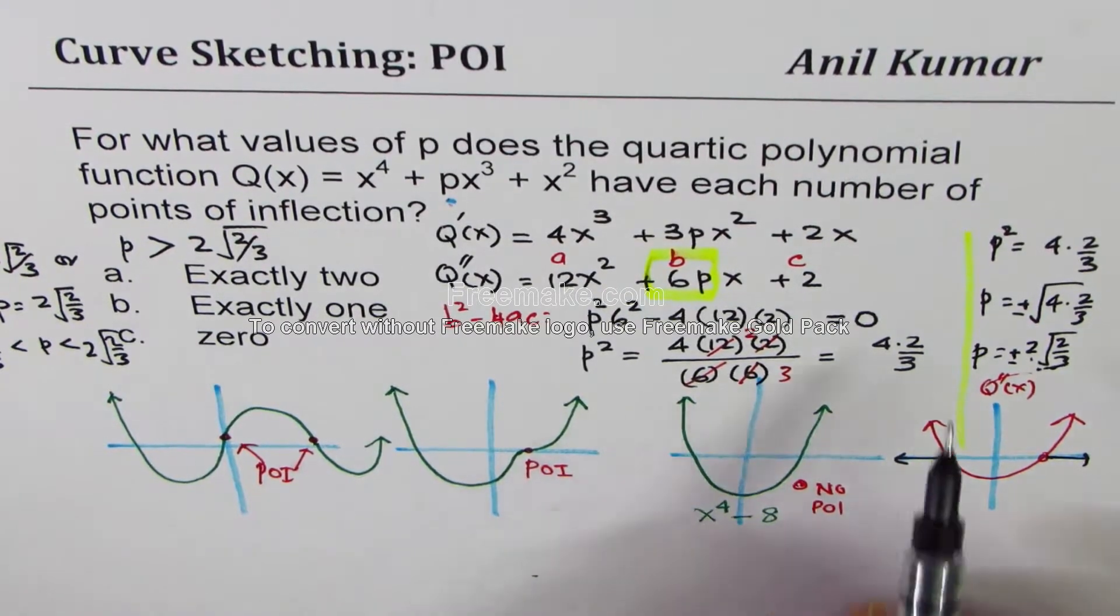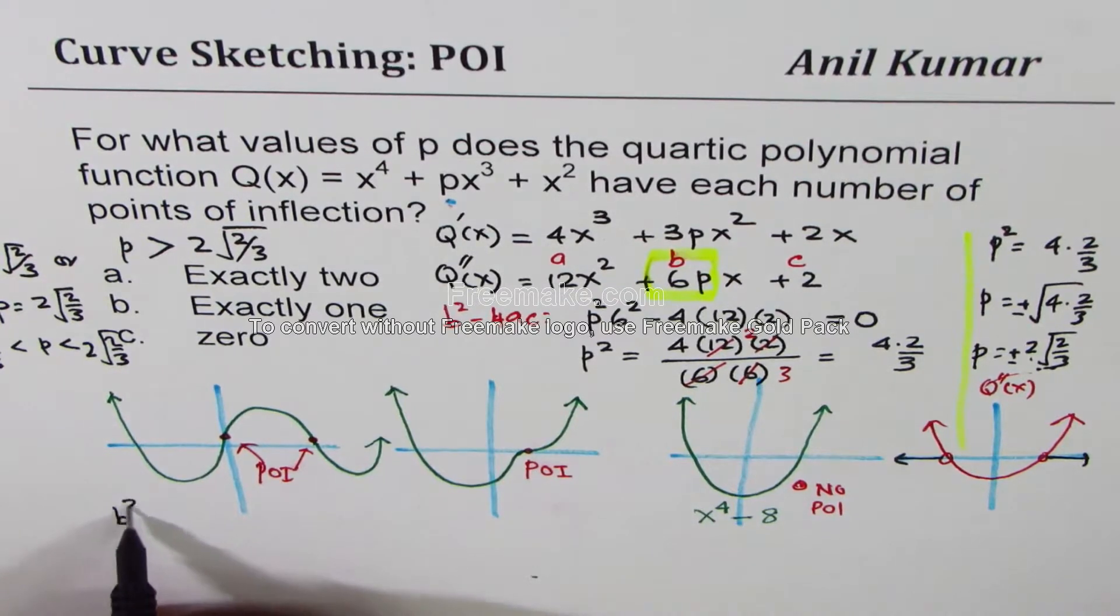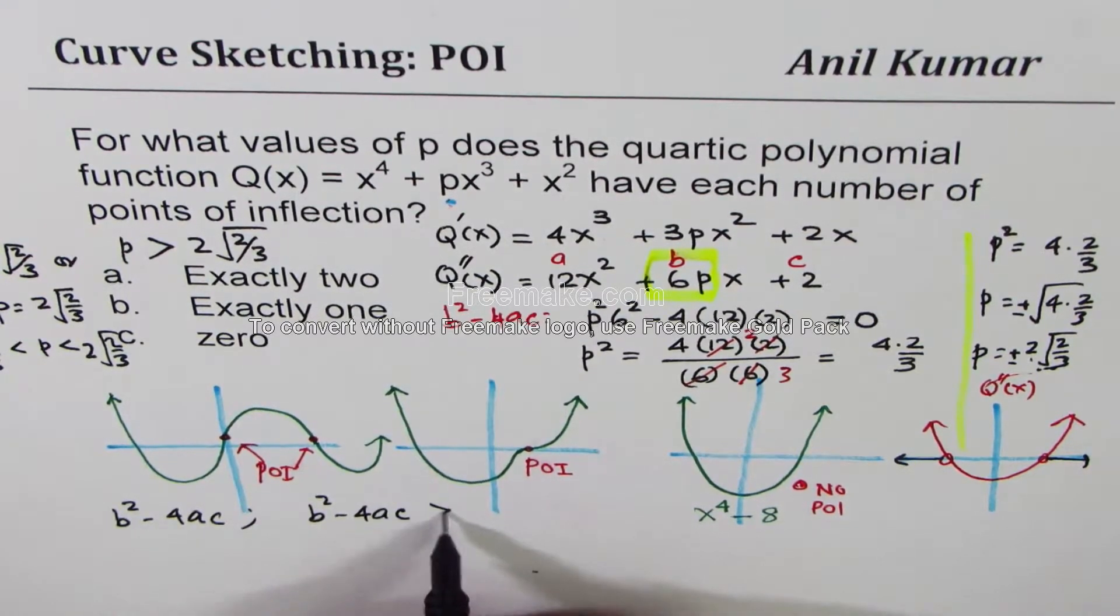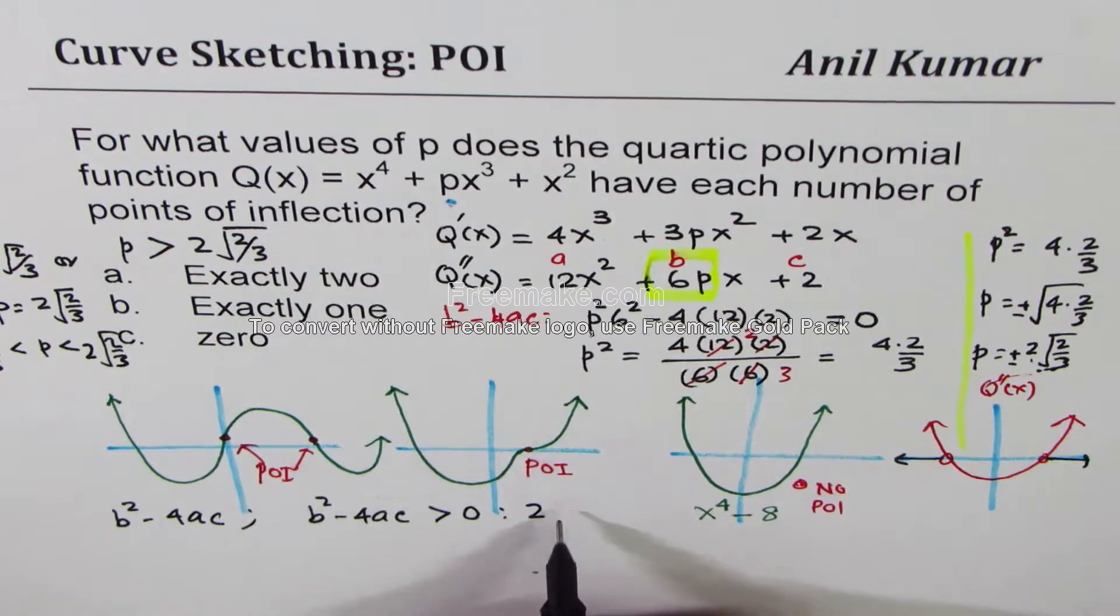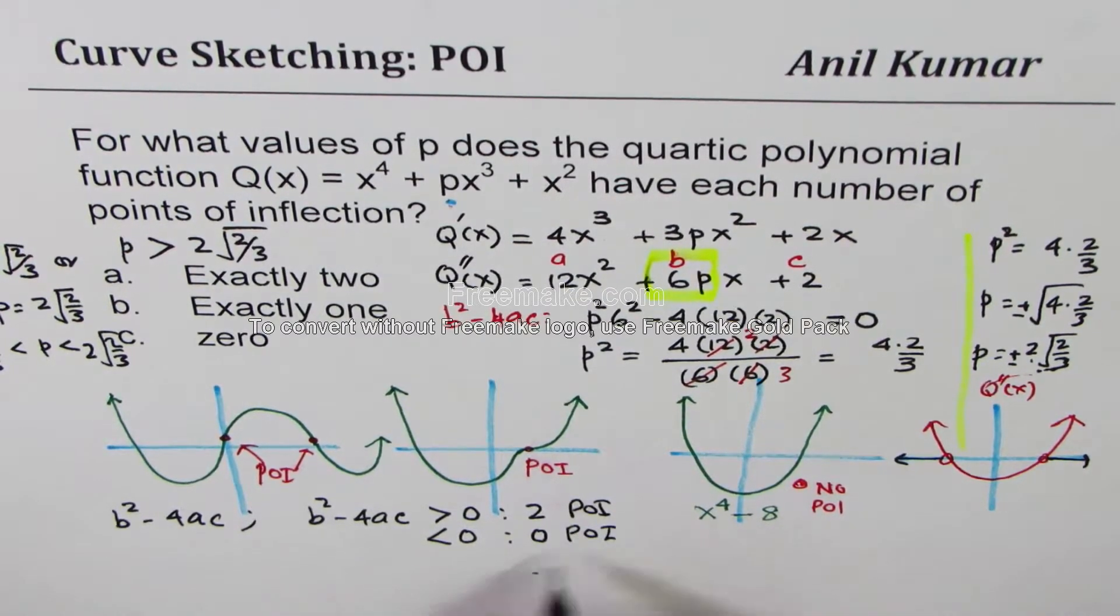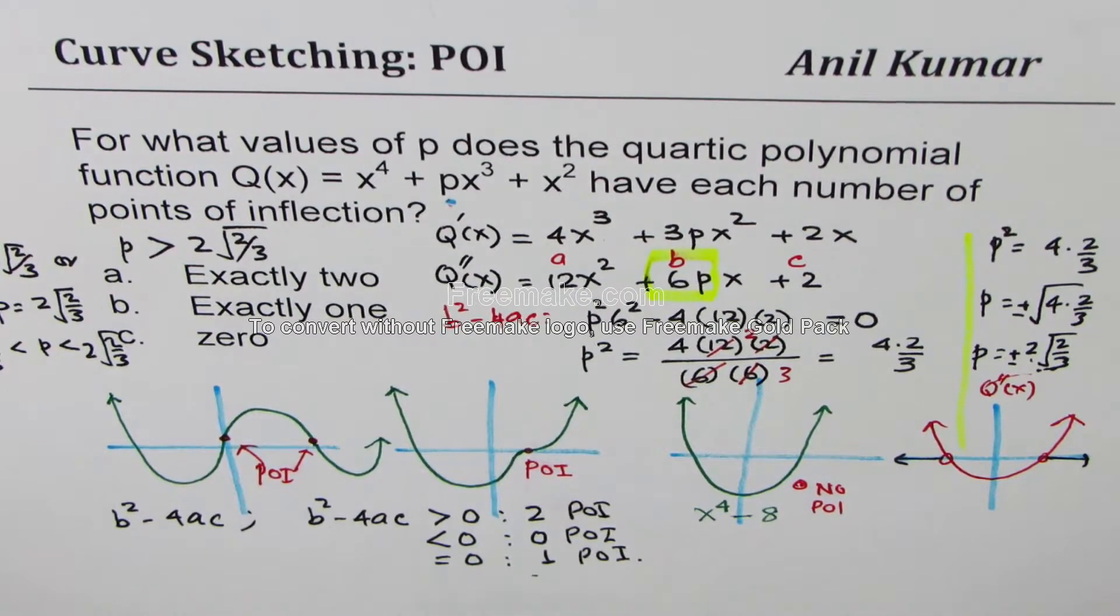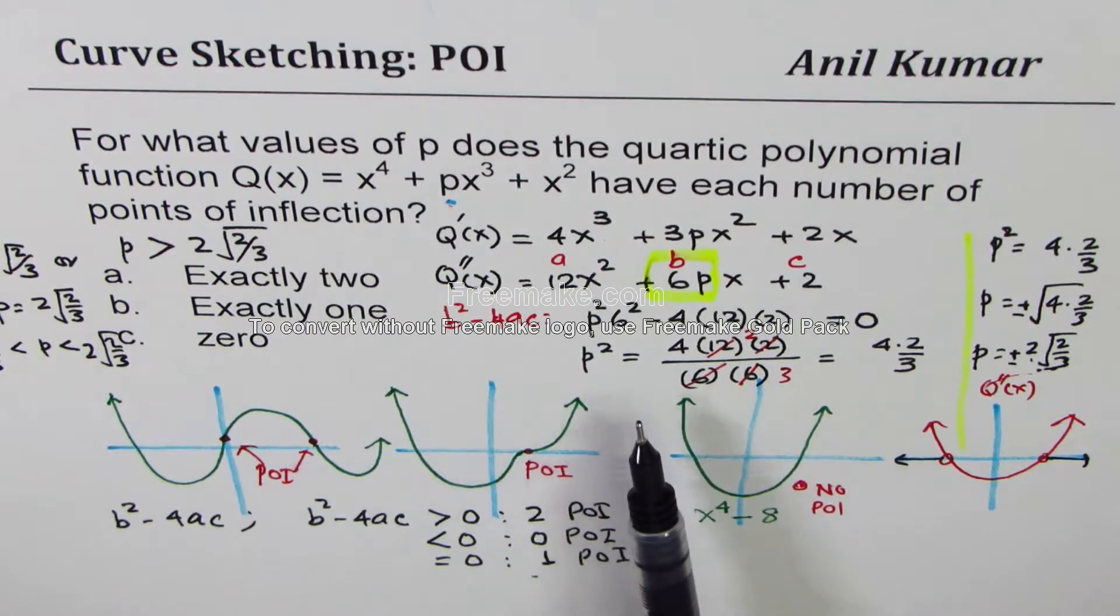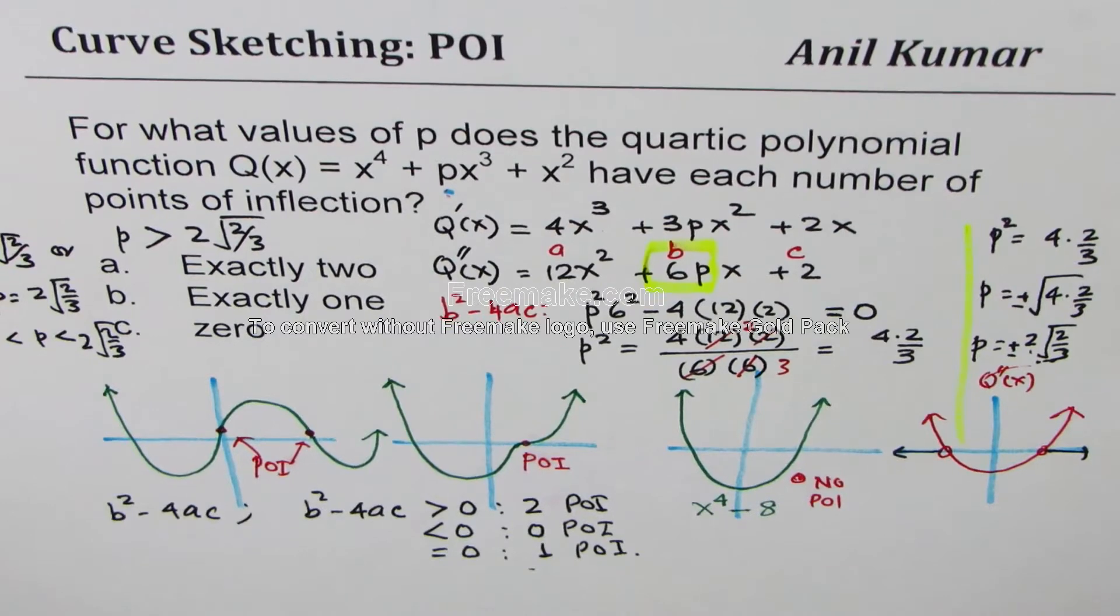I hope that helps. So basically what we did was we analyzed the discriminant b^2 - 4ac. If b^2 - 4ac is greater than 0, then we get 2 points of inflection. If this is less than 0, we get 0 point of inflection. And if it equals 0, we get 1 point of inflection. So that is how we found the value of p. Thanks for watching. Share my videos. Thank you and all the best.